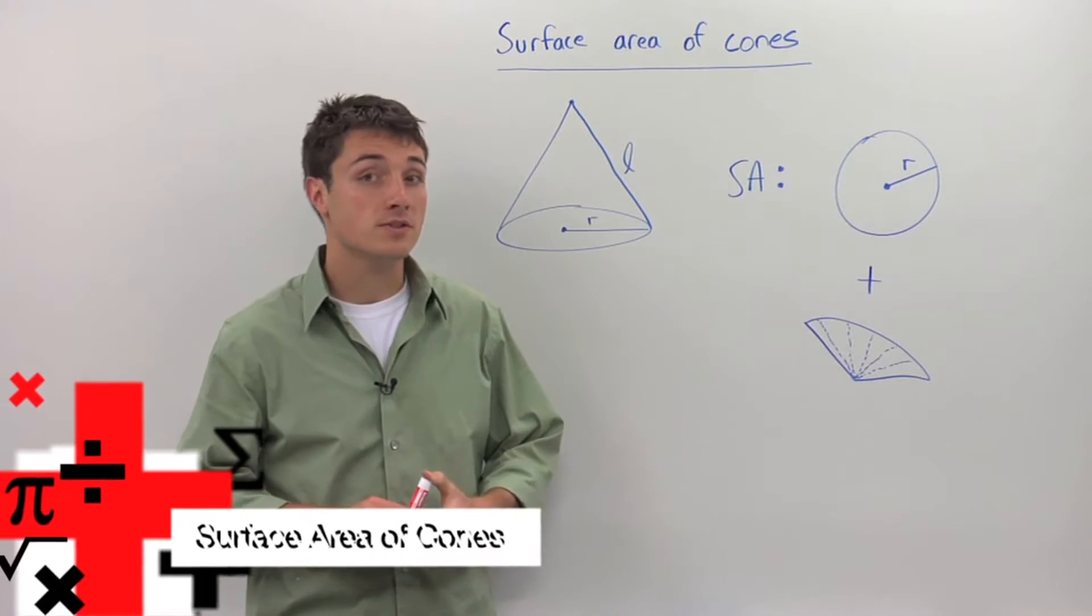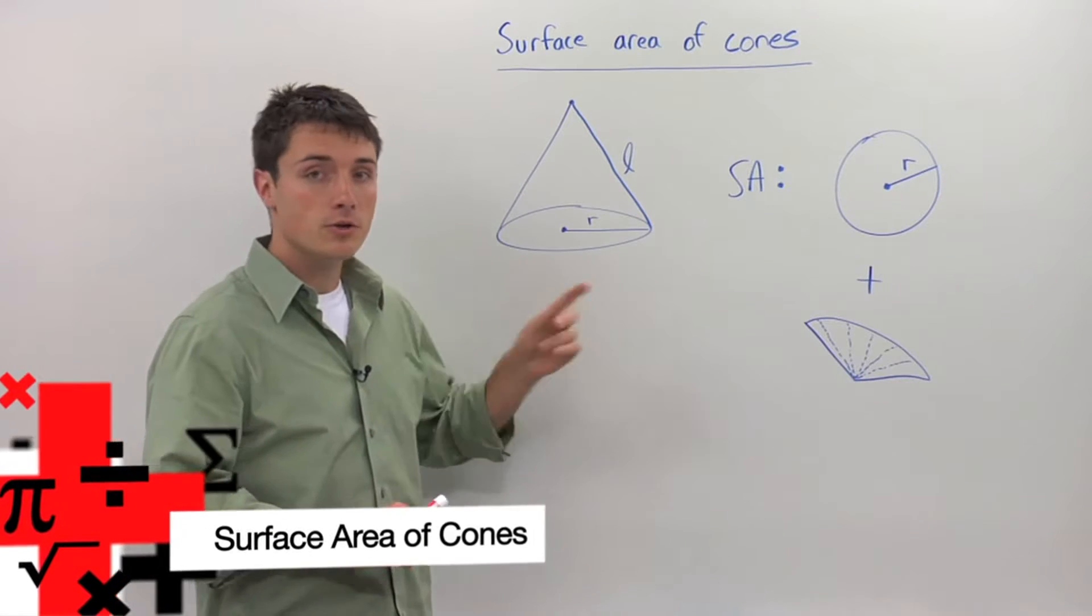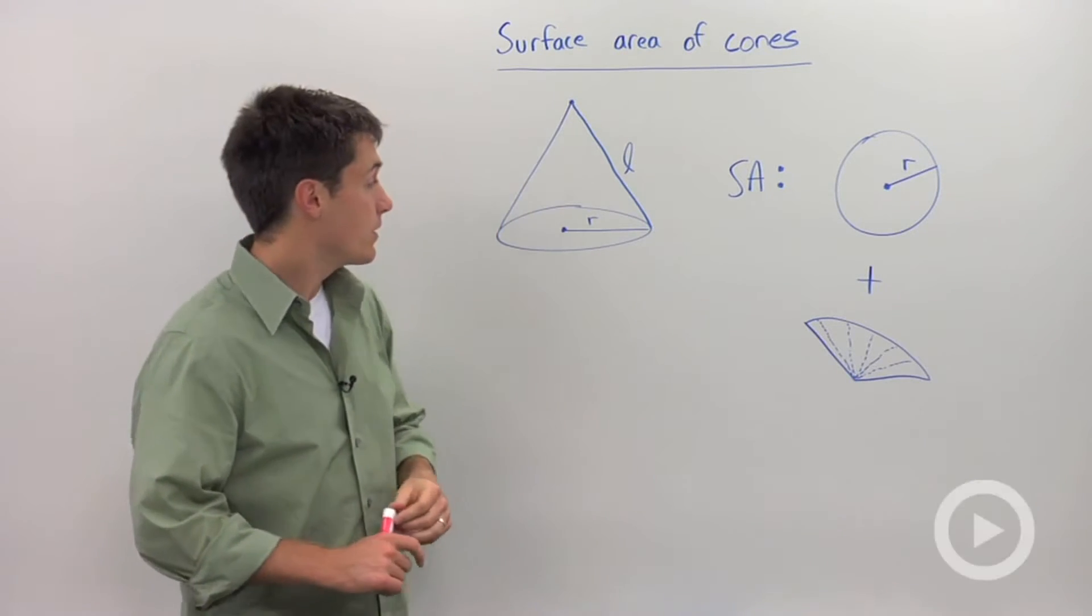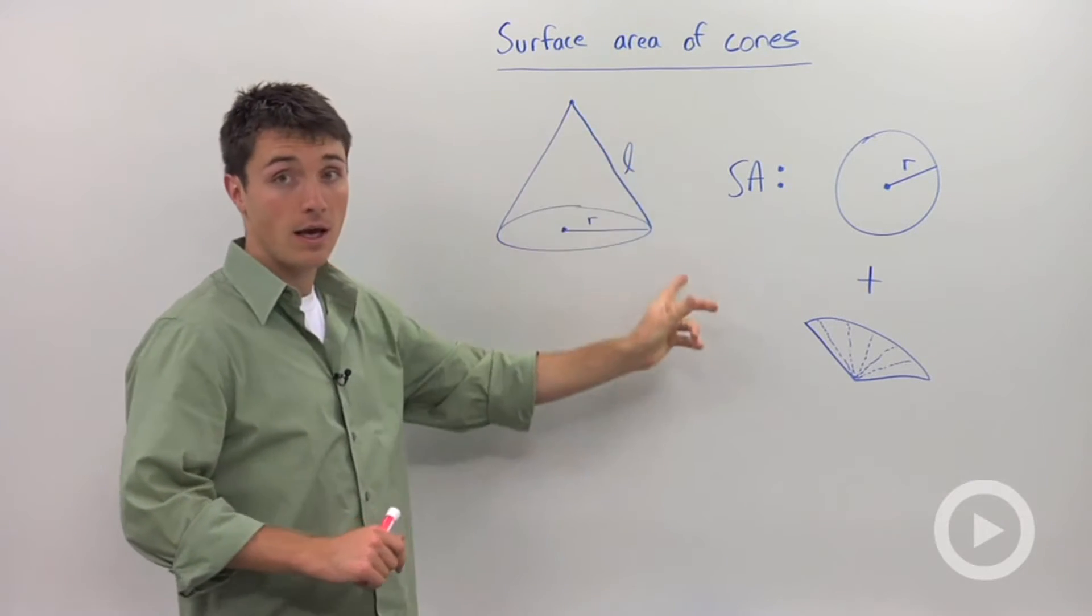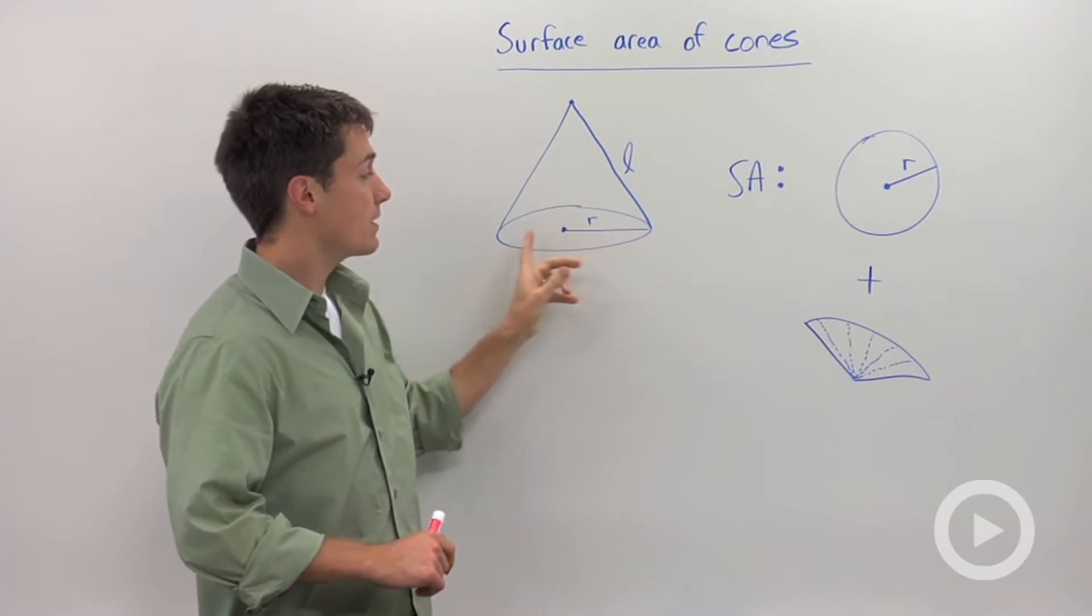If you want to calculate the surface area of a cone, you only need to know two dimensions. The first is the slant height, L, and the second is the radius.